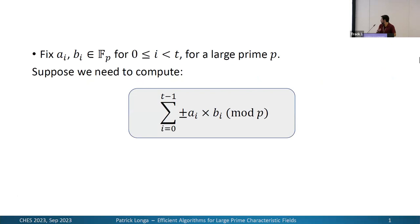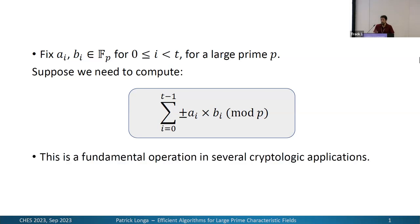Thanks for the introduction. Let's jump to the presentation. What we are concerned about is this operation: we have two sets of values A_i and B_i, each of size T, where each value is defined over a large prime field FP. The operation we care about is the summation of products between these sets, with the final result reduced modulo the large prime field.